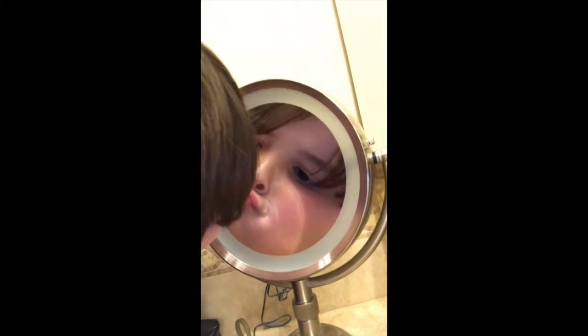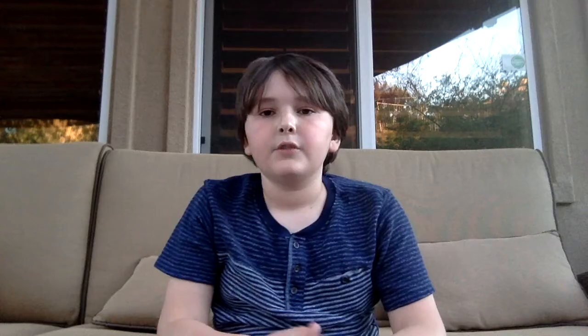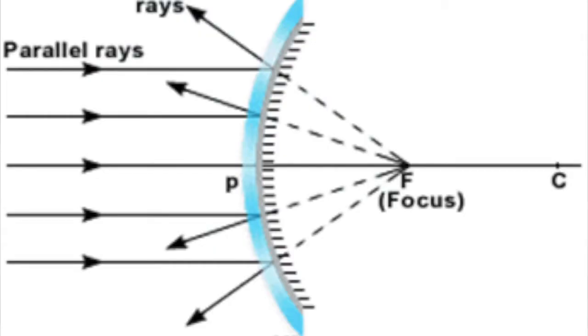From far away, your reflection in a concave mirror is reversed. From close up, your reflection in a concave mirror is larger than your actual face. The last type of mirror, a convex mirror, is shaped outward. This allows light to bounce away from the mirror, and a convex mirror makes objects appear smaller than what it is reflecting.